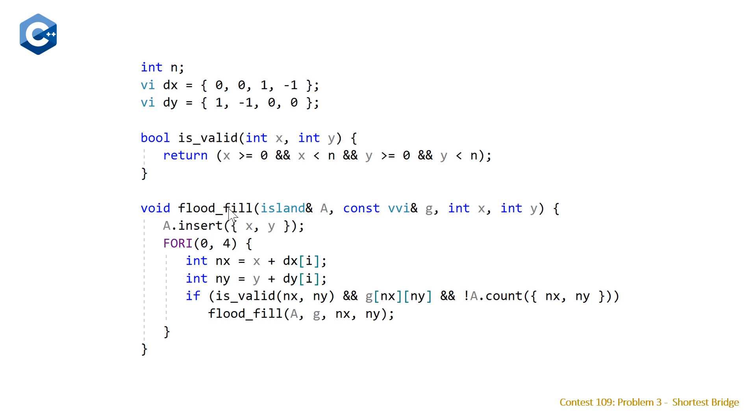For each call to our flood fill, we're going to insert the pair of coordinates into our island that we're currently flood filling. Then we have a for loop that's going to iterate four times over the deltas. We're going to calculate the new coordinates that we're trying to explore to. If those are valid coordinates and if the next element also has a value of one and it hasn't already been explored, then continue to flood fill in this direction.